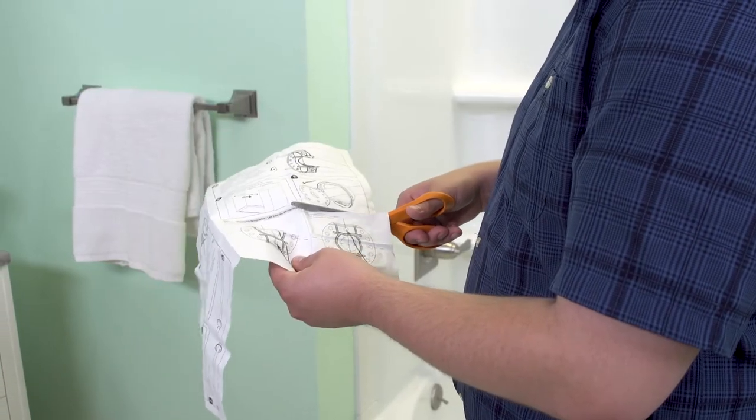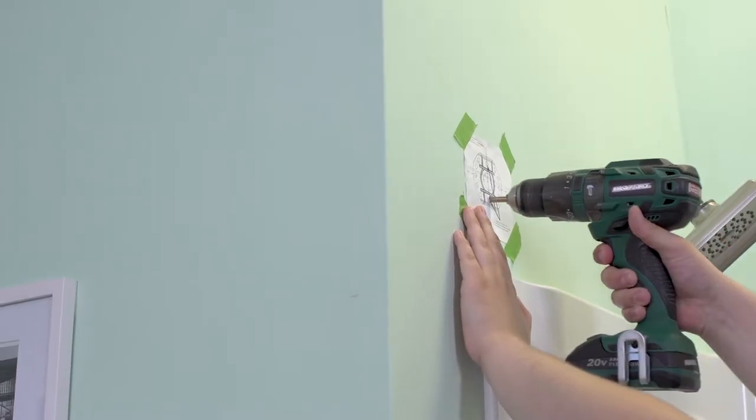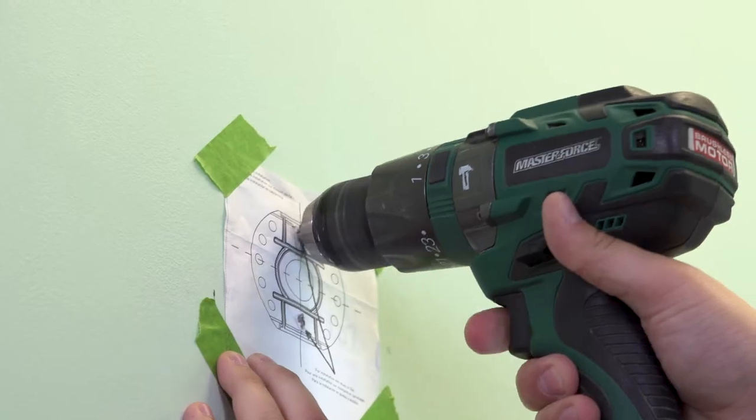Cut off the provided mounting templates and place them on both sides of the shower parallel to each other. Pre-drill quarter-inch holes through the template as indicated, then remove.